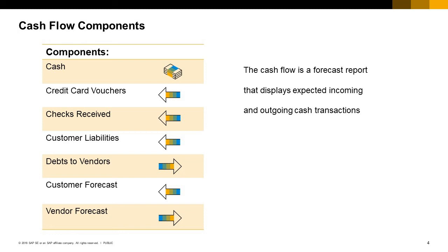It displays the balance sheet accounts, which reflect the monetary value of the company. The Cash Flow Report in SAP Business One lists the totals and balances of both the accounts that represent cash holdings and the accounts that expect a cash flow in the future, either incoming or outgoing, for the time interval you have requested.